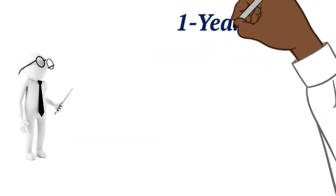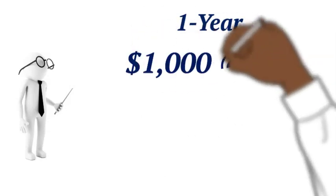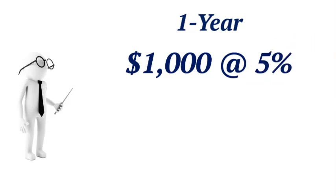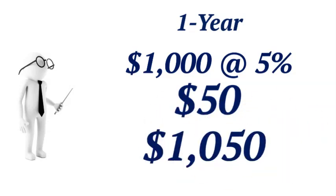I'm going to give you some examples of compounding interest. Imagine that you invested $1,000 in a savings account that offered an annual interest rate of 5%. At the end of the first year, you would have earned $50 in interest, bringing your total amount to $1,050.